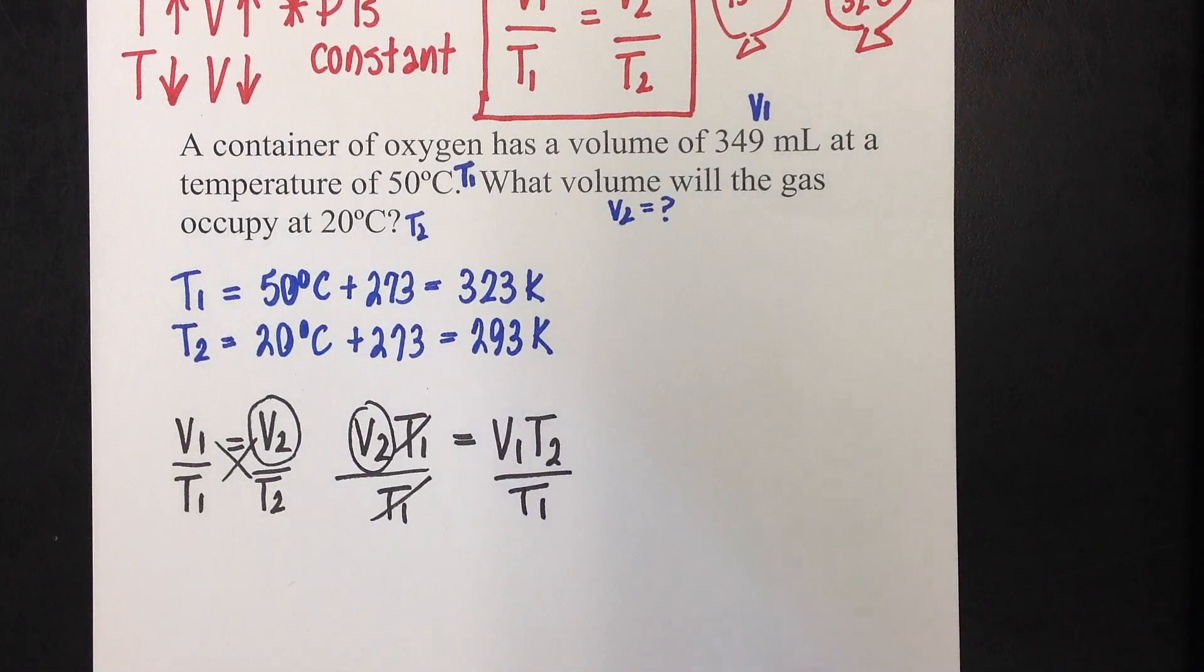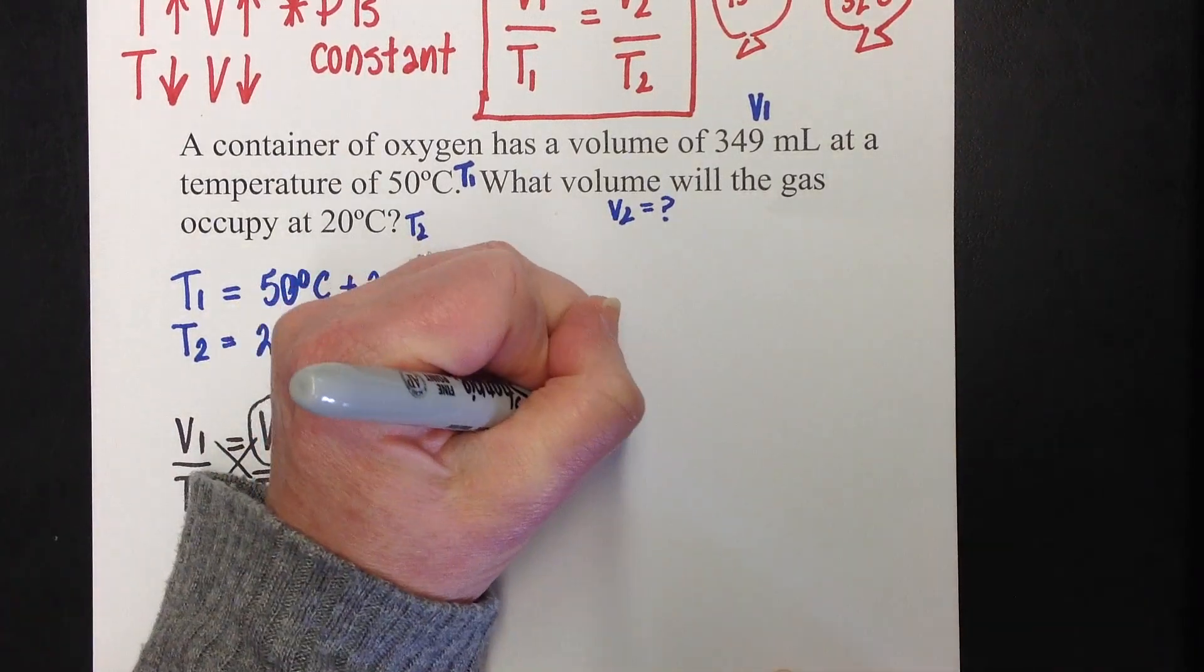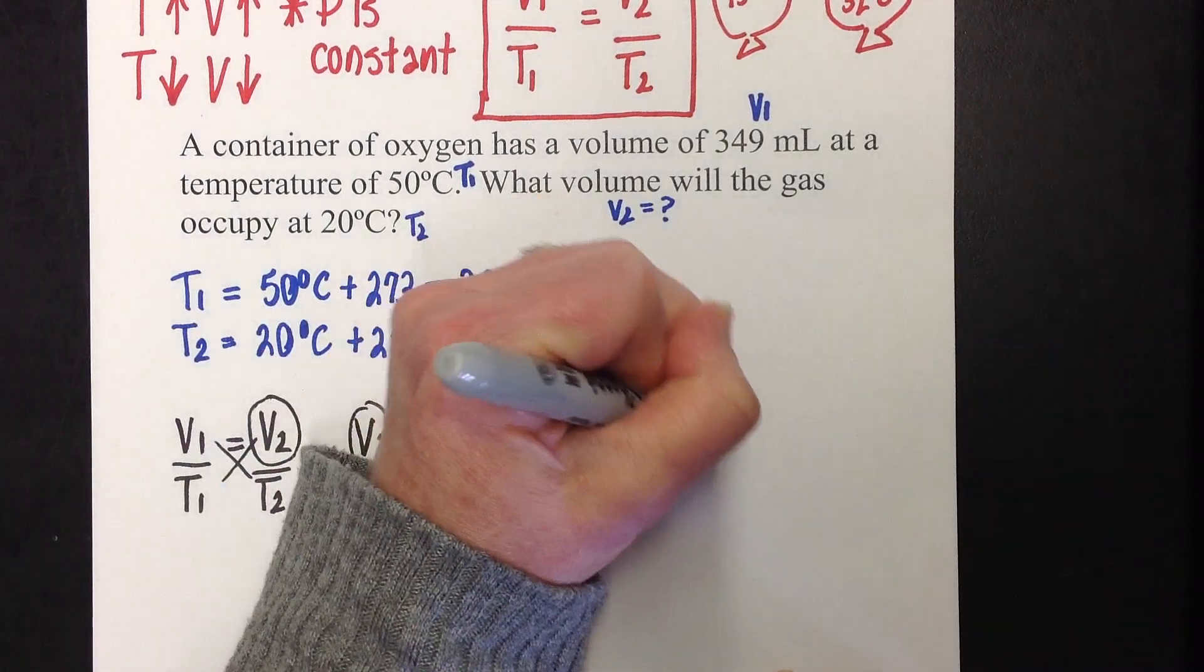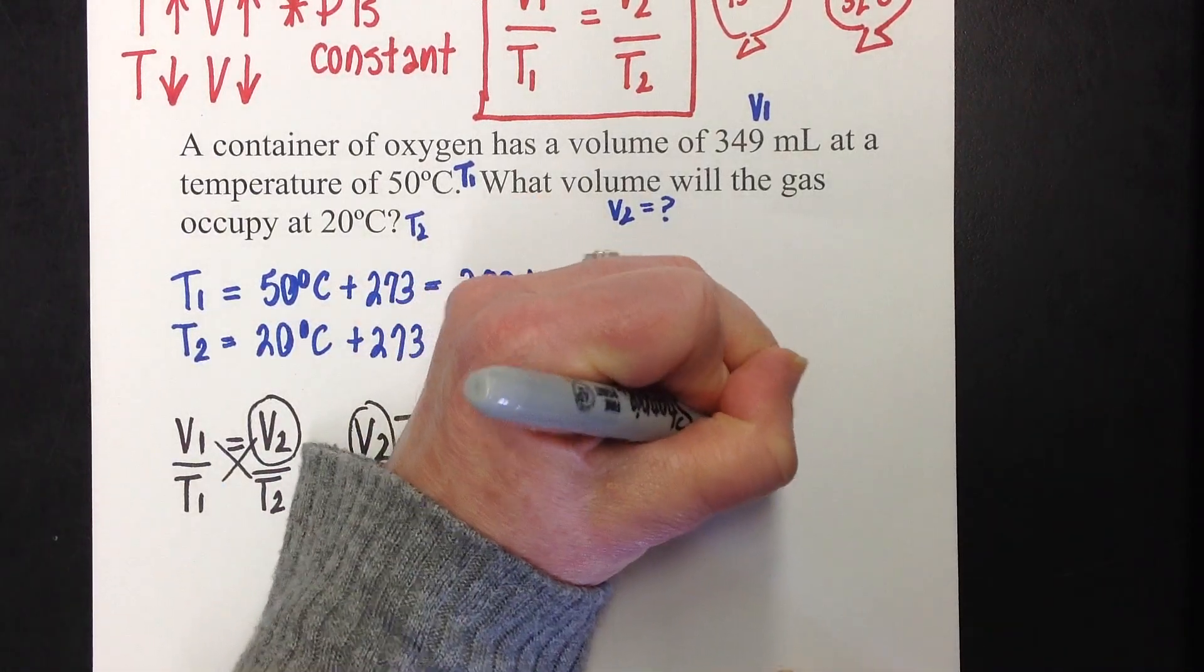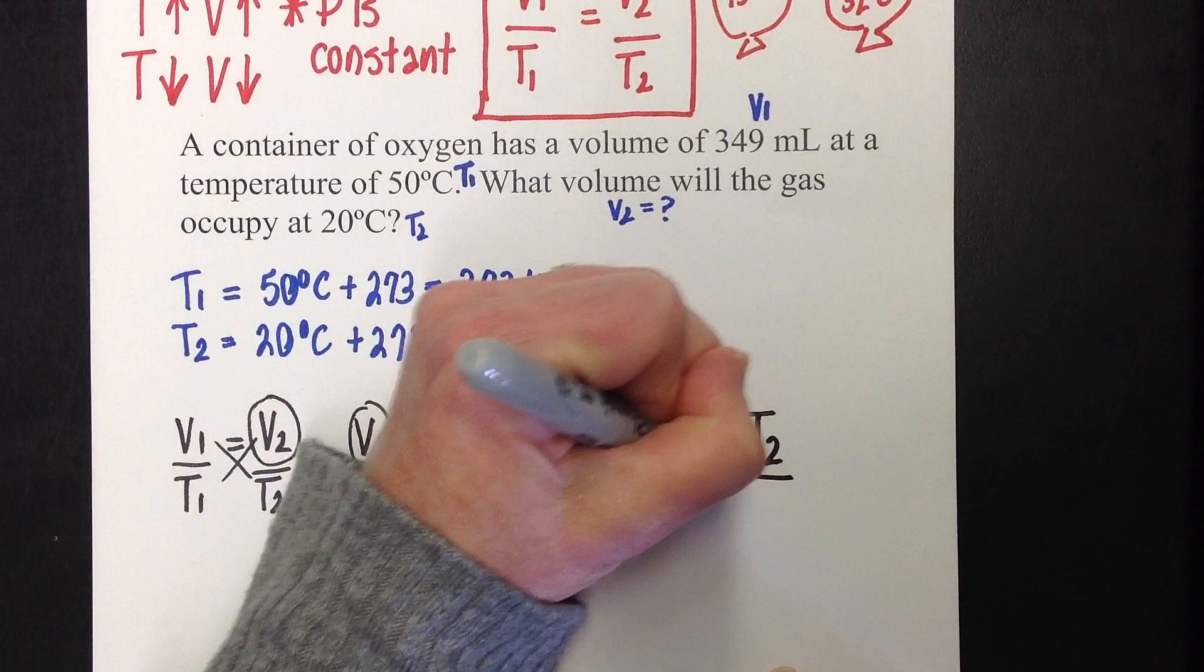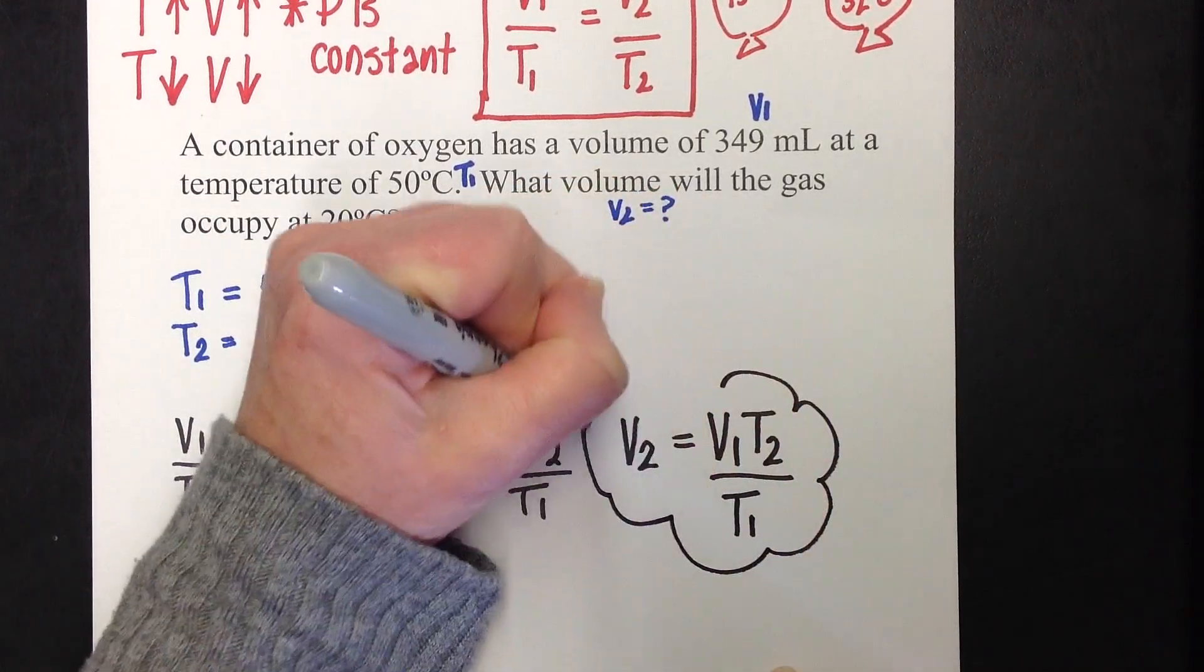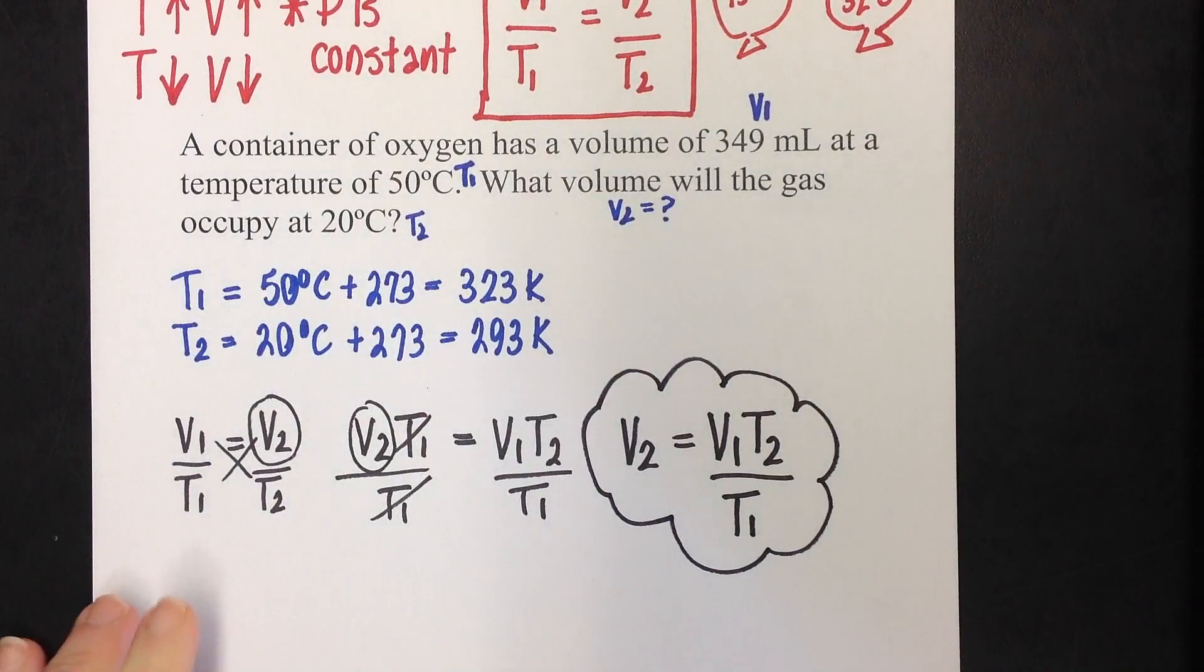Just to go a little extra for you, I'm going to rewrite that. Volume 2 equals V1 times T2 over T1. This is the formula that I am going to be plugging into.